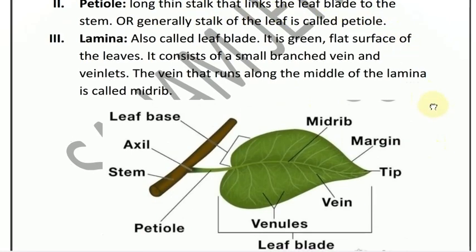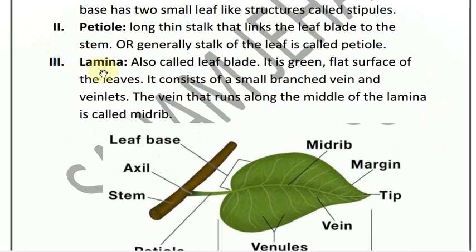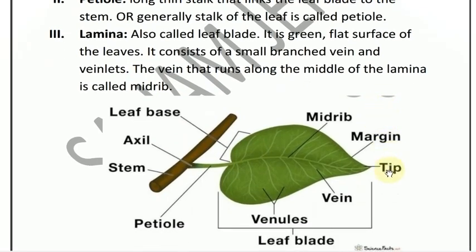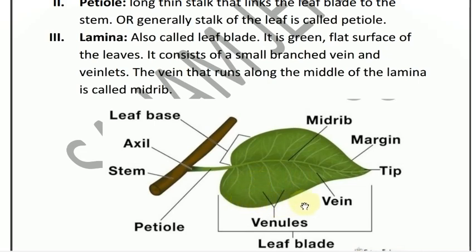The last important part is the lamina. Lamina is generally called leaf blade. The surface is green in color with small branch veins or venlets. These veins run from the petiole tip. The main vein is called the midrib, and then there are veins and venlets.